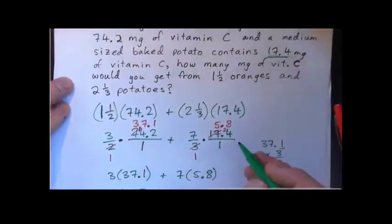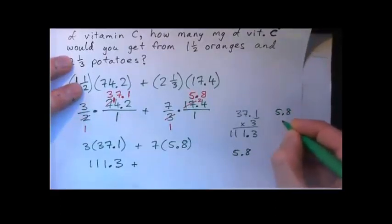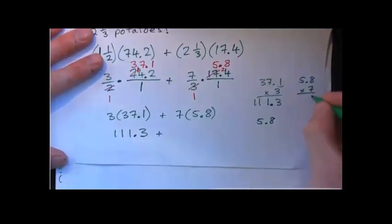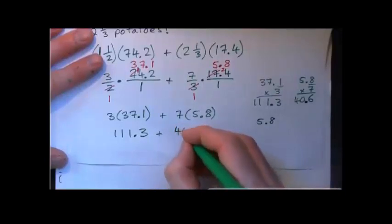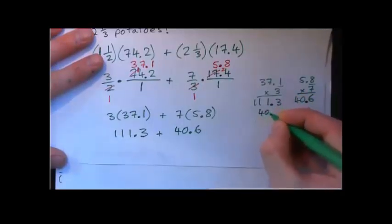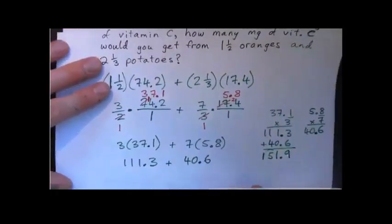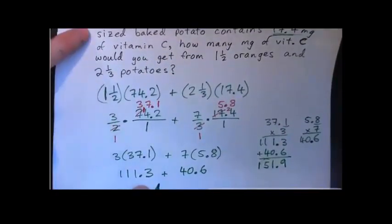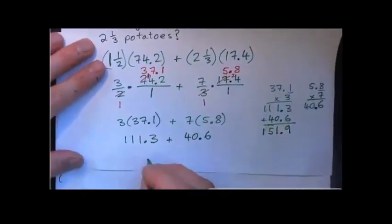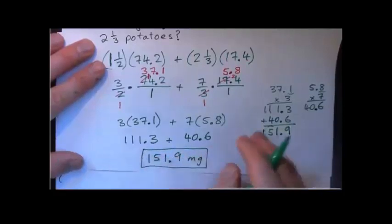Plus how much vitamin C from the potatoes? Two and a third potatoes. Five point eight times seven: seven eights is fifty-six carry five, seven fives is thirty-five plus five is forty — one decimal place — so forty point six. So we just have to add these: one hundred and eleven point three plus forty point six. Three and six is nine, one and zero is one, one and four is five, and one. So we get one hundred and fifty-one point nine milligrams of vitamin C from the one and a half oranges and two and a third potatoes.